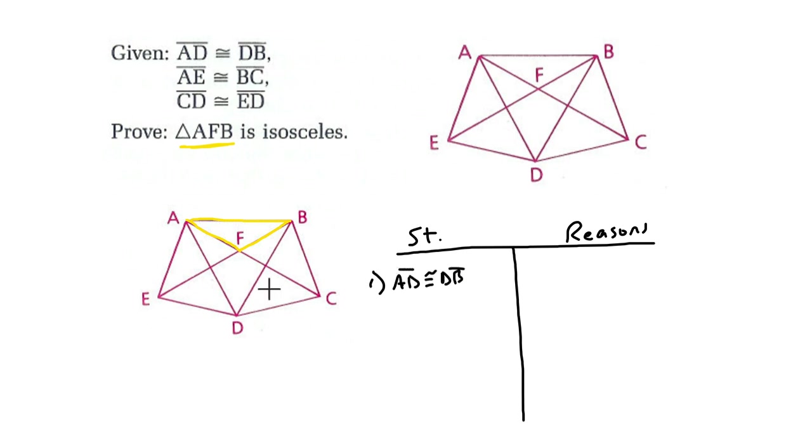Those segments are congruent. Then I'm going to go over here and mark it. I'm going to erase AFB real quick. AD is right here. This is AD. And then DB is right here. So I'm just going to sketch that out for myself. Because this diagram has a lot of overlap. Here's A, here's D, here's B. And this helps me see that AD is congruent to DB.